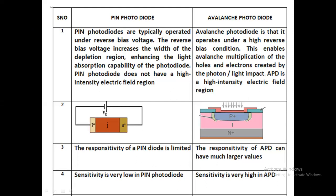The first one is the PIN photodiode. In the name itself, P indicates P-type, N indicates N-type, and I is the intrinsic region. PIN photodetectors are basically operated in reverse bias voltages, and this reverse bias voltage is of a very low range in PIN photodiodes — usually applied between just 5 to 10 volts.